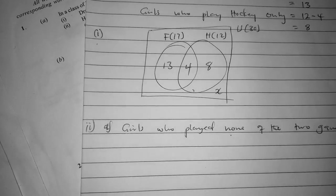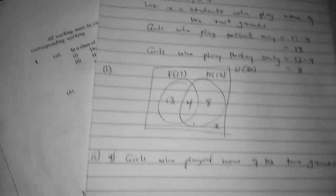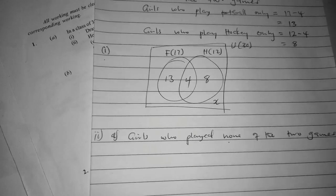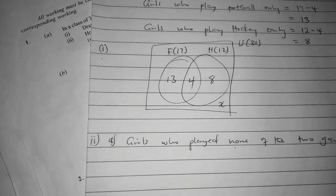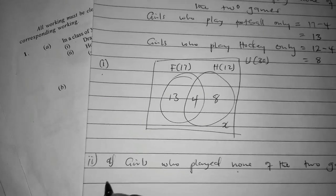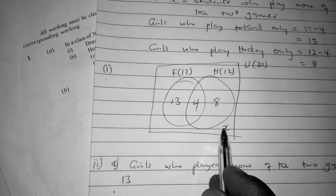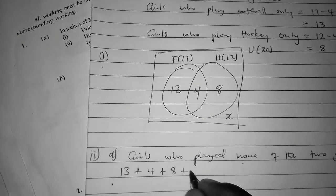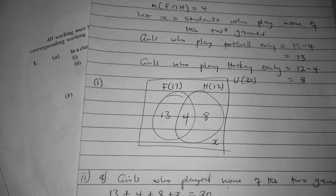When I sum up all the regions in the rectangle, I must get the universal set. So we have: 13 + 4 + 8 + S must equal 30. This is a linear equation, so let's solve it quickly.